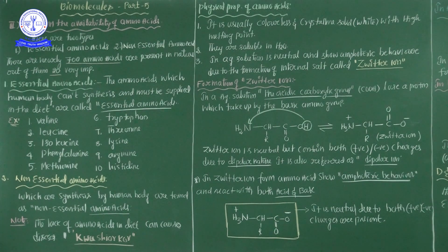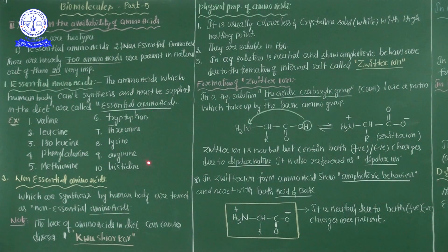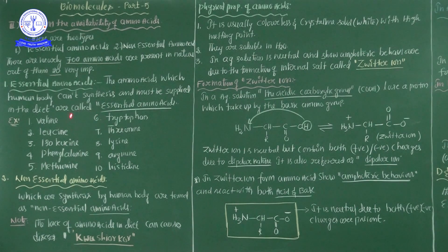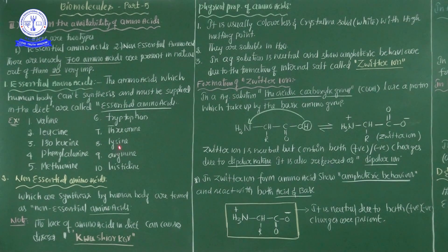These 10 essential amino acids cannot be synthesized by the human body from birth. They are obtained from food material — good quality food such as carbohydrates, fruits, and other food materials can easily supply these amino acids to the human body. There are other essential amino acids as well, but these 10 are the major ones.